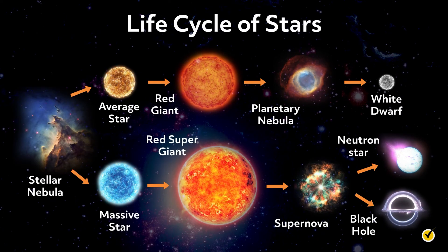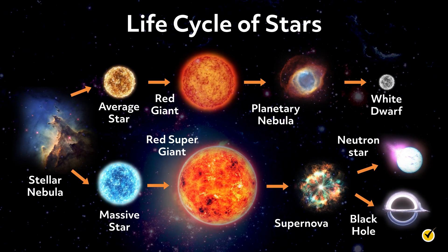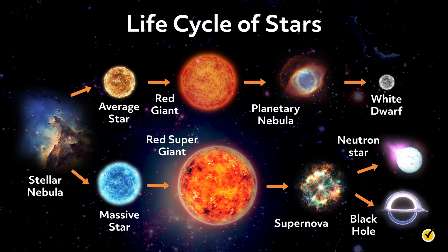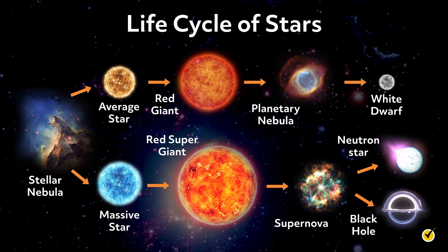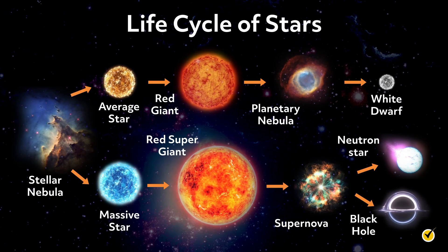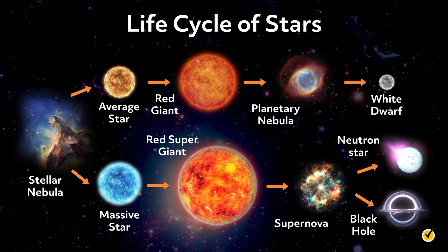When thinking about the things that stars can turn into when they die, it's easiest to think in terms of a flow chart. A small or medium star turns into a red giant at the end of its life. Then it creates a planetary nebula and a white dwarf.